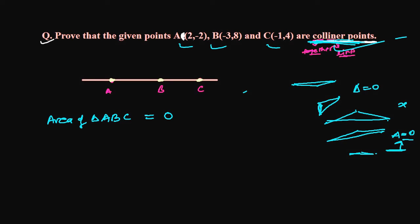An area of zero means nothing — like if I say I have one million rupees in my bank account, that means I have money. But if I say I have zero billion dollars in my account, it means I have no money at all. Even zero trillion dollars means nothing. So area of the triangle being zero means there is no triangle at all.